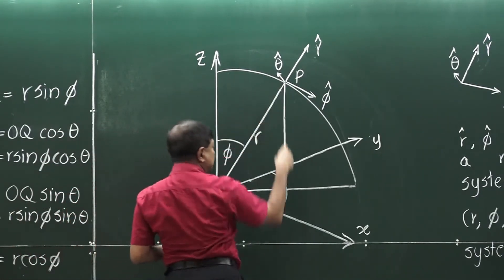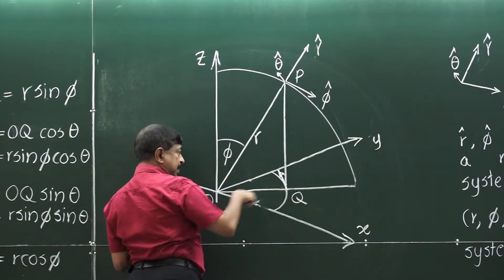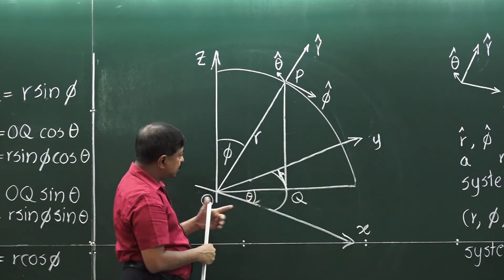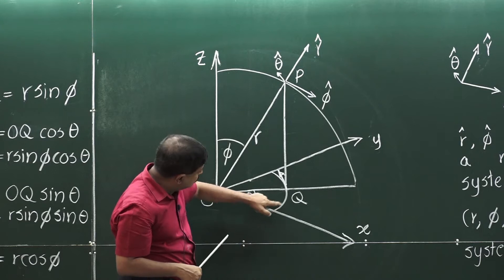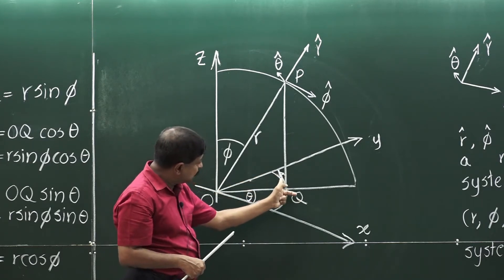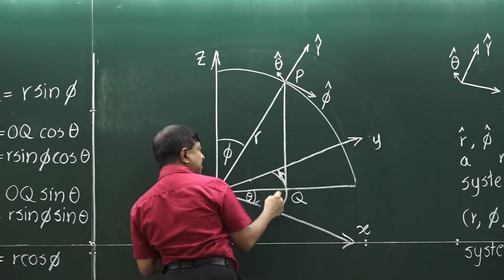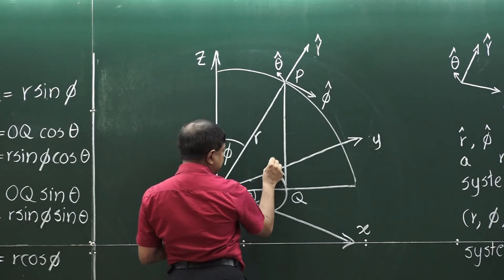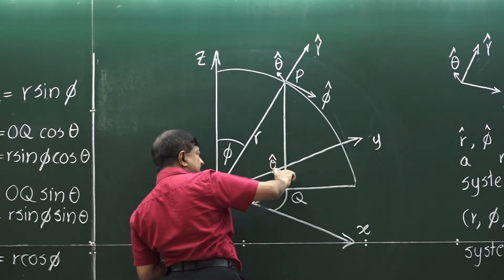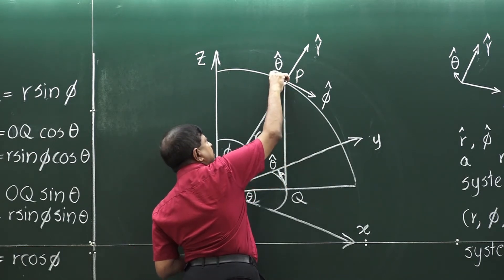Once you project point P onto Q on the XY plane, to increase theta — theta is this angle — you have to move along this circle on the XY plane. This is theta hat. Without changing this vector, these are changing direction and size, so you can take this up there.